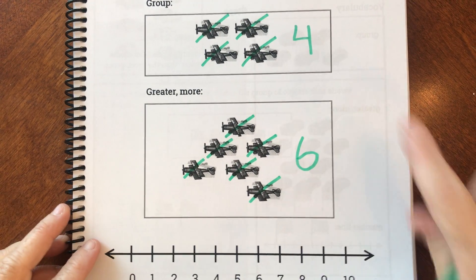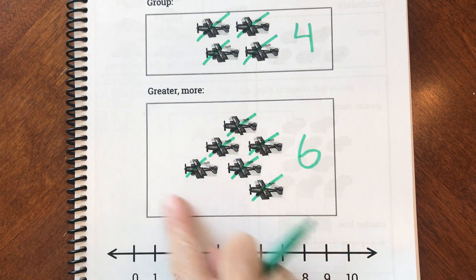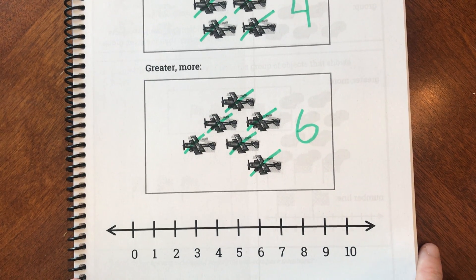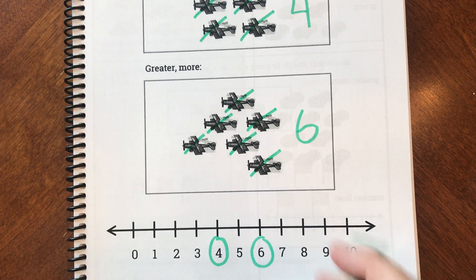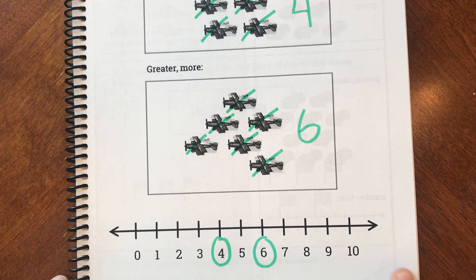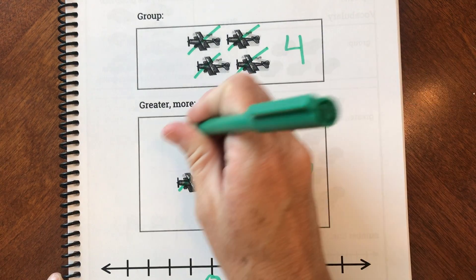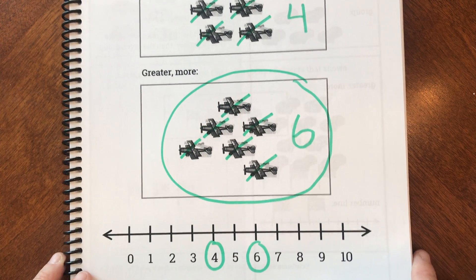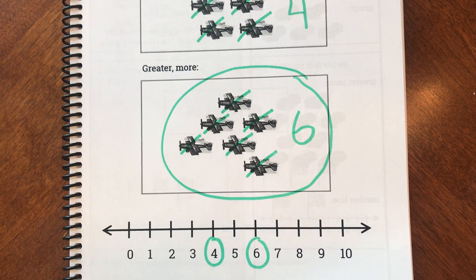Okay, so friends, if this group had four and this group had six, this group has more. There's greater than here. There's more. Because if I look at my number line, here's four and here's six. Six is greater than four because our numbers get greater as we move up. Six is more than four. So this group had more airplanes than this group. That's what we're going to be talking about for the next few days is what does this greater than or more look like?